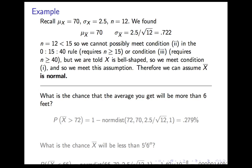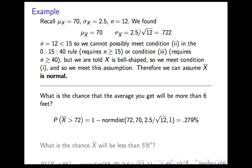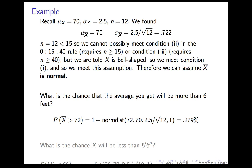Now we can do calculations. First question: what is the chance the average will be more than 6 feet? That's the probability x-bar is greater than 72 inches. Greater than 72 is 1 minus normdist of 72, with mean 70 and standard error 2.5 over square root of 12. The probability of it being over 6 feet is 0.279% — quite small. That makes sense because 6 feet is 2 inches above the mean, and the standard error is 0.722, so 6 feet is almost 3 standard deviations above the mean. Very unlikely.